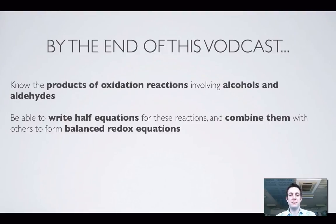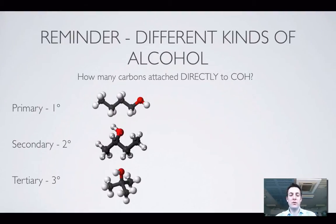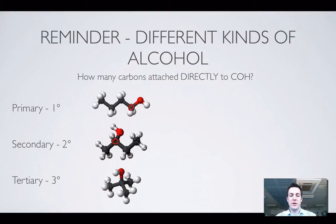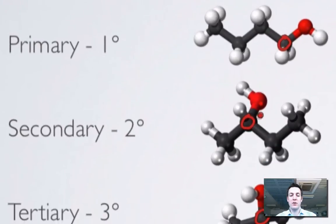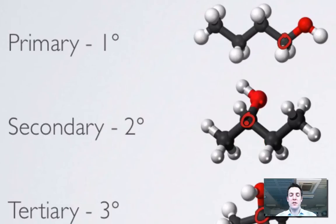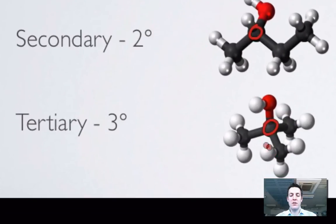First of all, let's just remind ourselves of the different types of alcohol, because this is going to be really important in determining what kind of reactions we'll get. I've got a primary alcohol here because there's one carbon attached to the alcohol carbon. If there had been none it would also be a primary alcohol. Here there are two carbons attached to the alcohol carbon so it's secondary, and here there are three so it's tertiary.